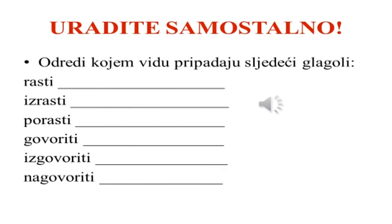Dragi sedmaci, evo i nekoliko zadataka koje treba samostalno da odradite. Prvi zadatak zahtijeva da odredite kojem vidu pripadaju sljedeći glagoli: rasti, izrasti, porasti, govoriti, izgovoriti, nagovoriti.